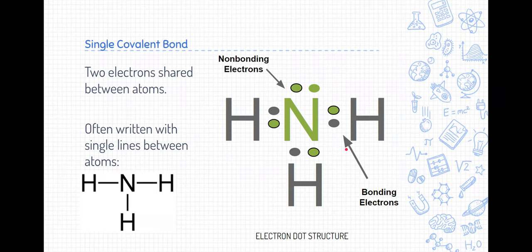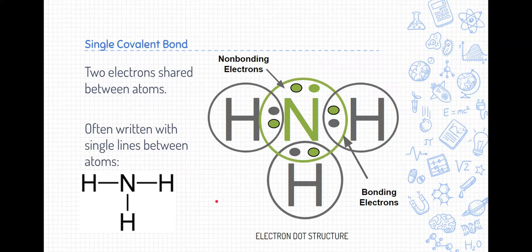Now, a single covalent bond are just two electrons that are bonding electrons shared between atoms. Oftentimes, for simplicity, we write it like this, as you see in the lower left-hand corner, where each of the lines, those single lines, represent two elements. So here is a way we can see how those electrons are being shared.